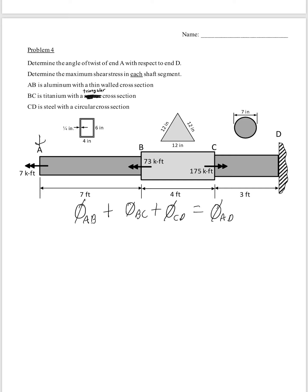And we also want to find the maximum shear stress in each shaft. So we're given AB is an aluminum with a thin wall cross section, BC is titanium and it has a triangular cross section, and CD is steel with a circular cross section.